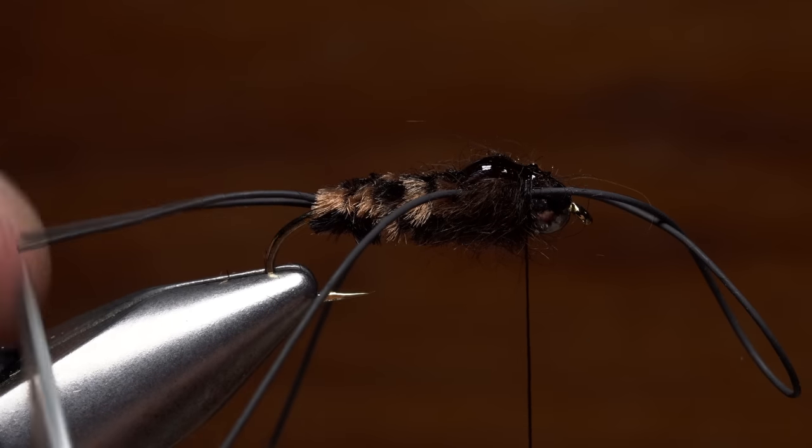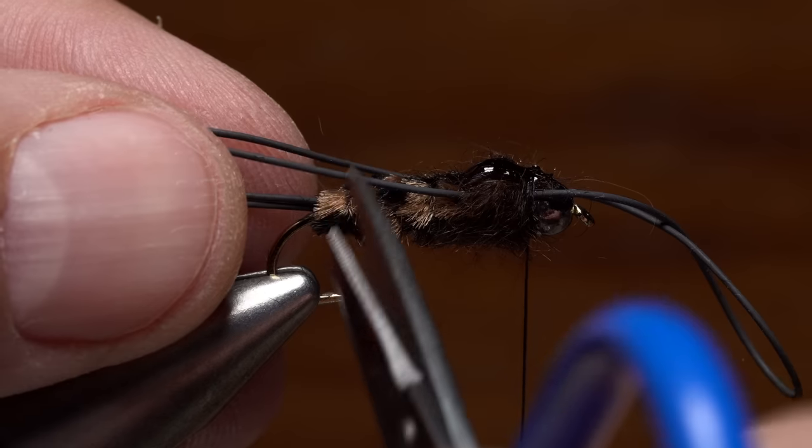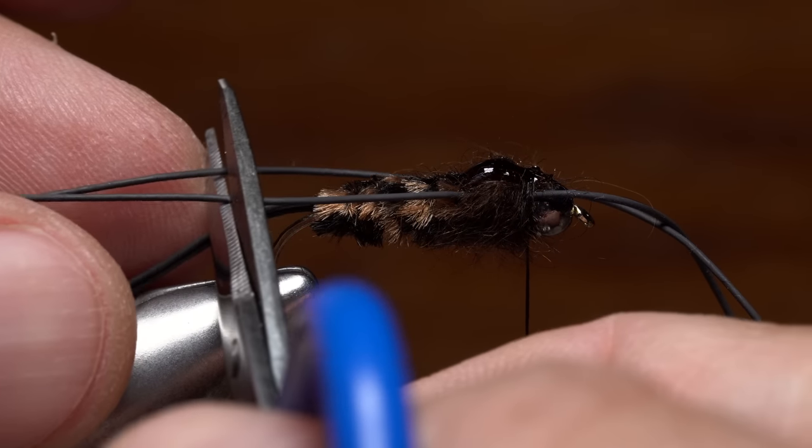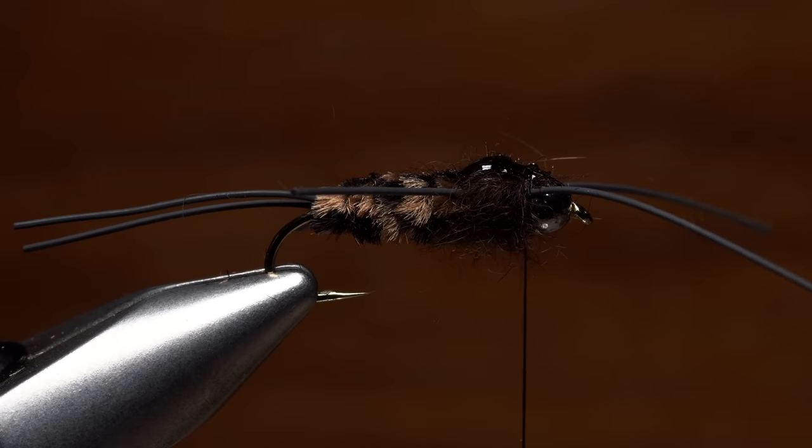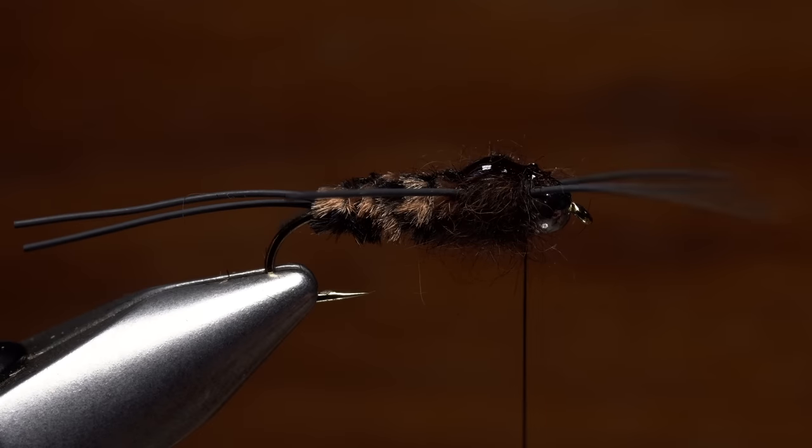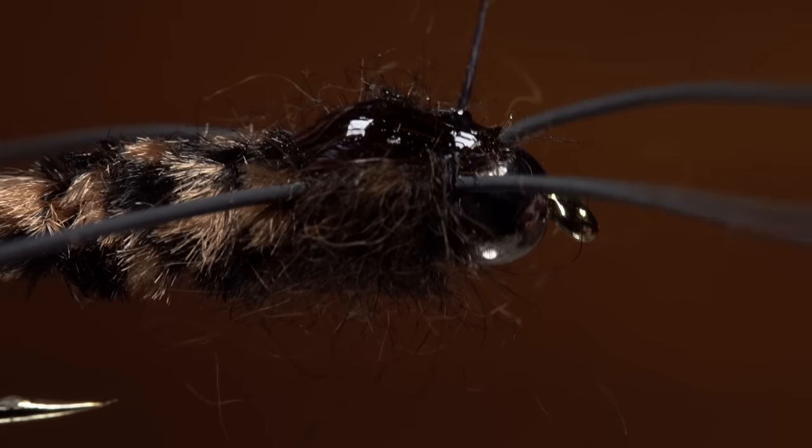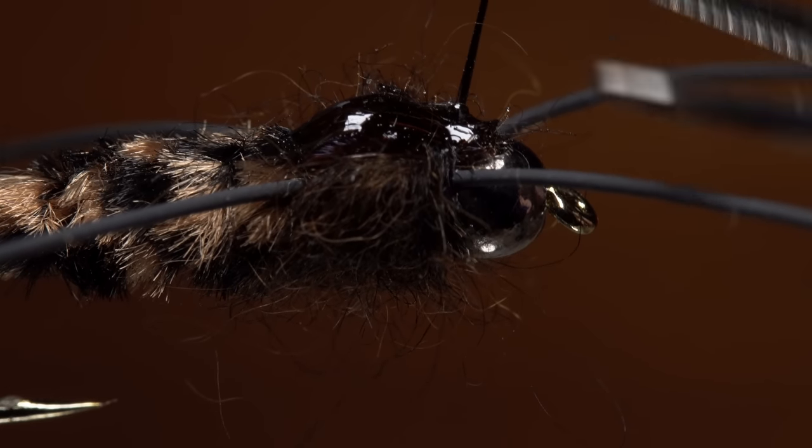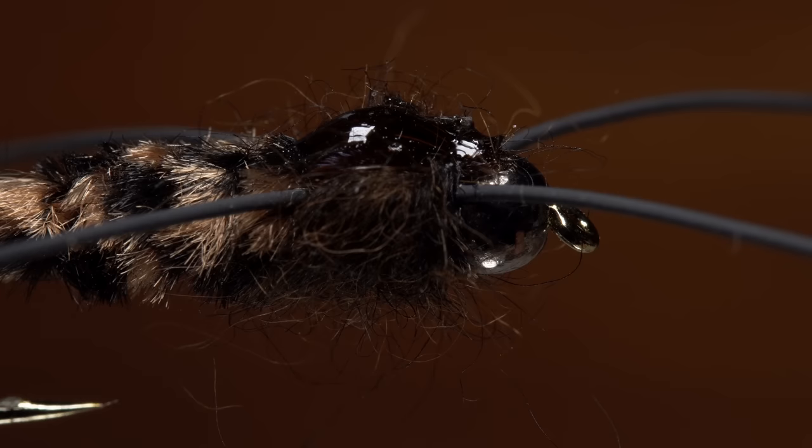You can then trim the tails off to about a full hook in length, then trim the back legs so they extend about halfway down the tail. Try to get the front legs cut to about the same length as the back legs. You may have noticed that I didn't whip finish. The UV resin coating the thread wraps is enough to keep them from unraveling, so you can just snip your tying thread off close.